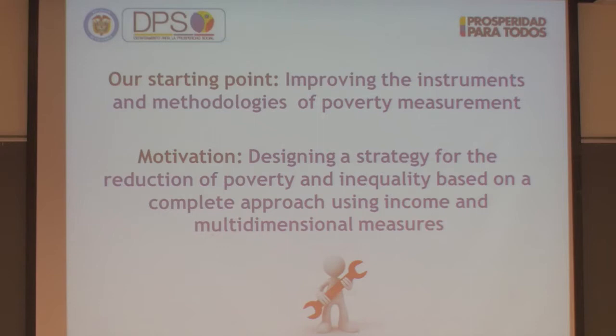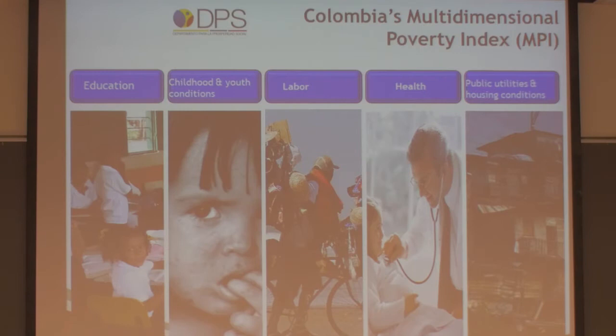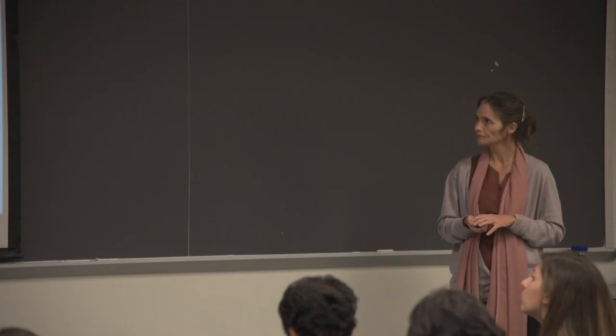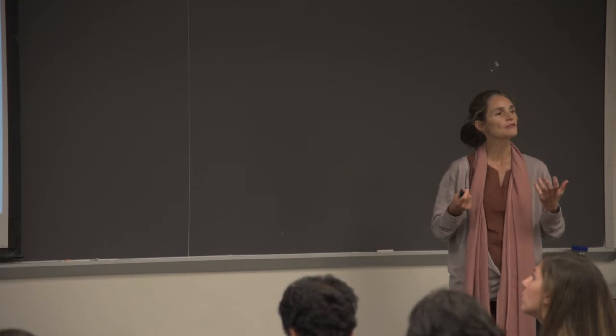Colombia's measure has five dimensions — compared to the global MPI's three. It includes education and health, as seen in the global MPI, plus something like living standards. But they also add work or employment/labor, and a dimension of childhood and youth conditions. So those are the five dimensions. As I said, these dimensions are conceptual — they don't go directly into the matrix — but they were also organizing concepts of the National Development Plan.